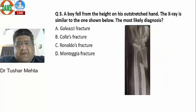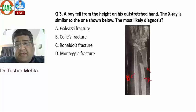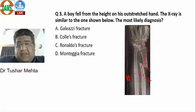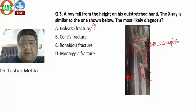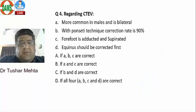Question 3: A boy fell from a height onto an outstretched hand. The X-ray shows a fracture at the shaft of the radius at the junction of the middle third, along with distal radioulnar joint disruption. This is a Galeazzi fracture, also called a Piedmont fracture or Hegasmonteria fracture.